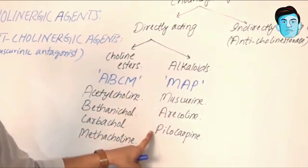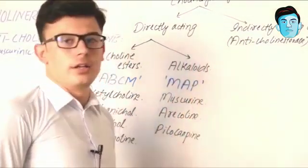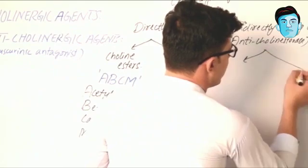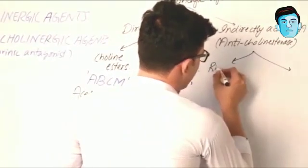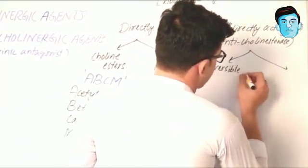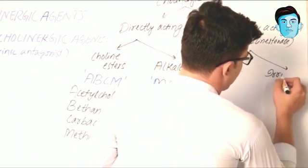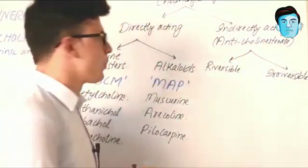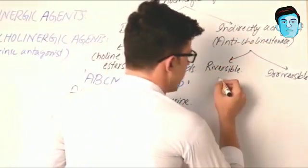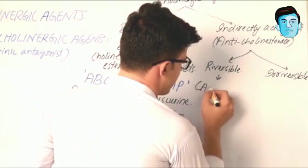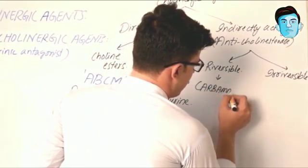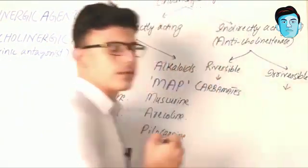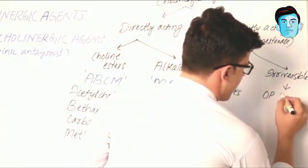Now let's talk about anticholinesterases. Anticholinesterases contain two important groups: reversible anticholinesterases and irreversible anticholinesterases. The reversible category contains carbamates, and the irreversible anticholinesterases contain organophosphorus compounds.